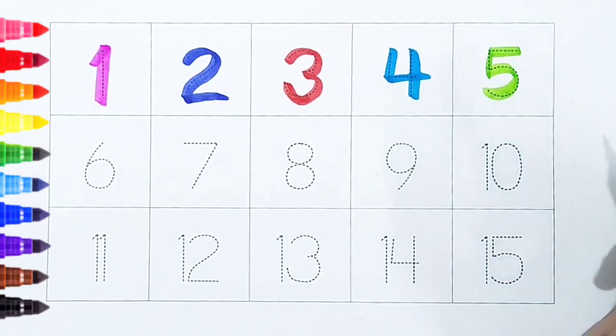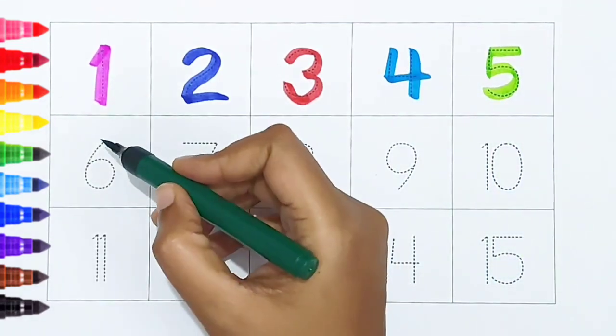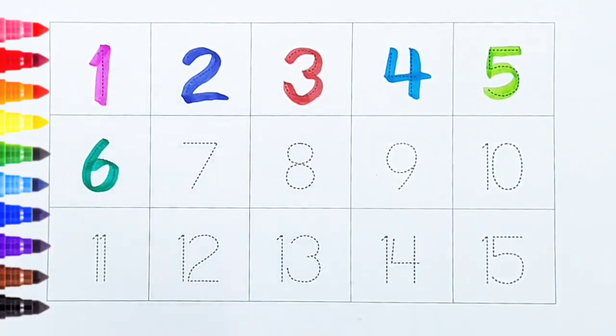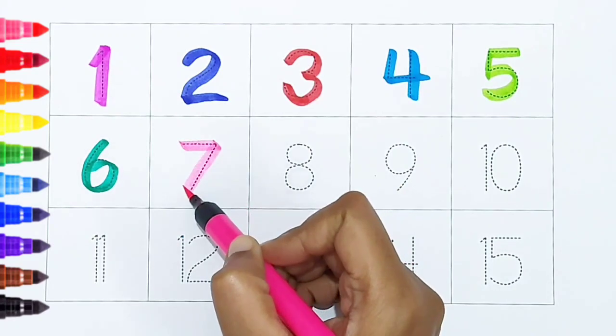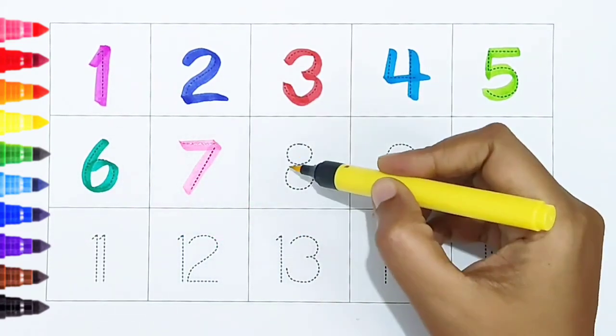Six, dark green color. Six, dark green color. Seven, light pink color. Seven, light pink color. Eight, yellow color.